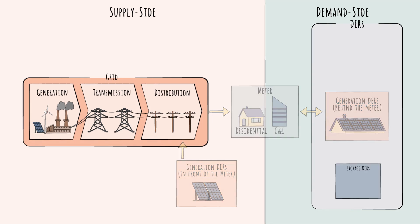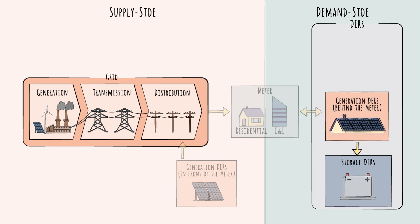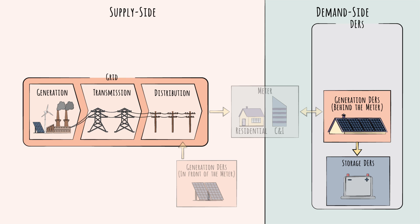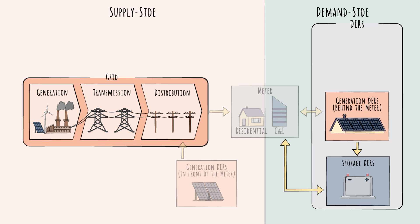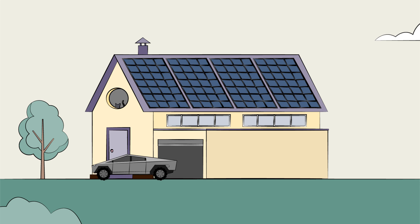Next, let's turn to the storage DERs. The leading example is batteries, which are often paired with rooftop solar. Storage DERs can store power that is generated on-site by a generation DER, or they can store power from the grid – say, charging up during off-peak hours for use later when prices are higher. The largest and most promising source of distributed batteries is hiding in plain sight – in garages, on roads, and in parking lots. We're talking, of course, about electric vehicles, or EVs.